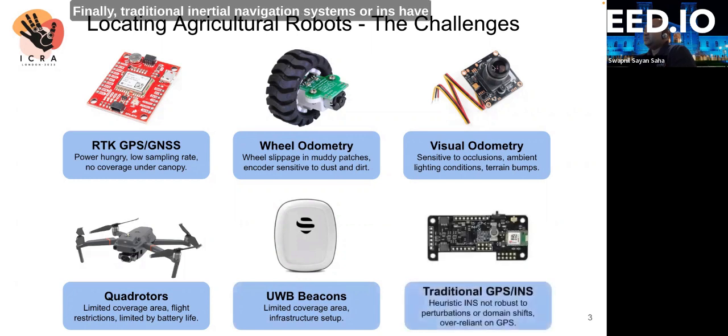Finally, traditional inertial navigation systems, or INS, have a small footprint, low delay, and low power. However, traditional INS is over-reliant on GPS to mitigate the curse of drift in inertial measurement units, and the heuristic propagation models are not robust to inertial perturbations or domain shifts.